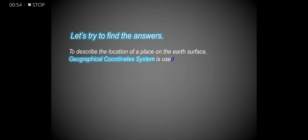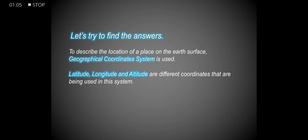To describe the location of a place on the Earth's surface, a geographical coordinate system is used. Latitude, longitude and altitude are different coordinates that are used in this system.